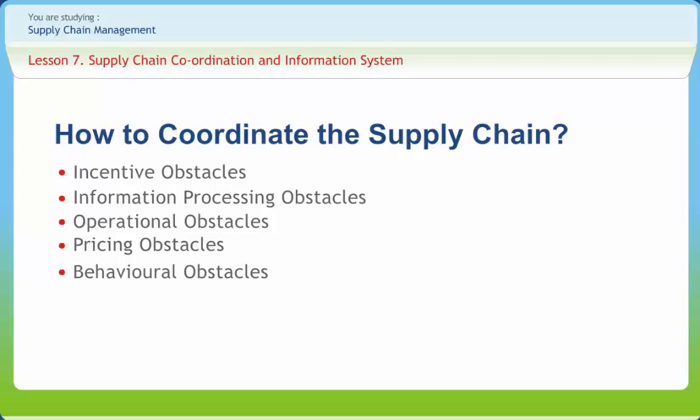The lack of information sharing between stages of the supply chain magnifies the bullwhip effect. In order to check this constraint, the internet and a variety of different types of software systems can be used to increase the visibility of information throughout the supply chain. In most cases, this requires additional effort. The internet can be used to share information and increase connectivity in the supply chain.